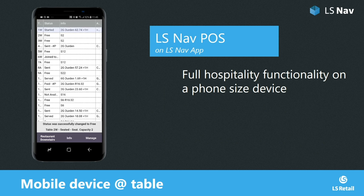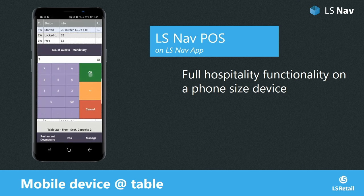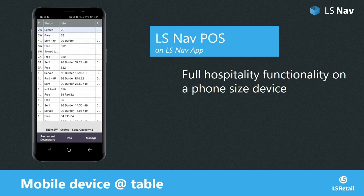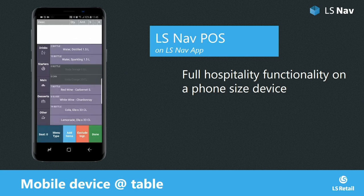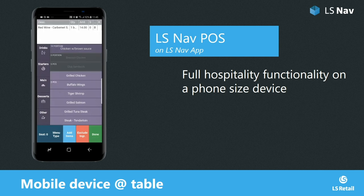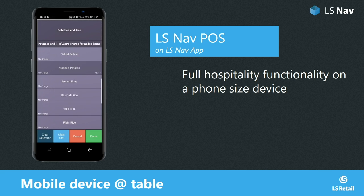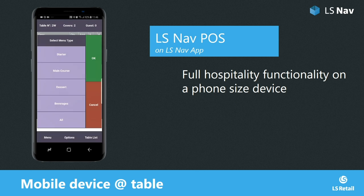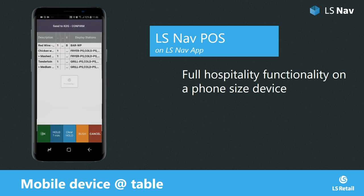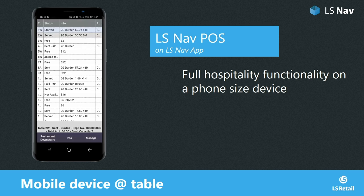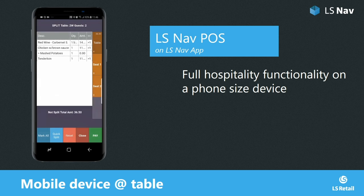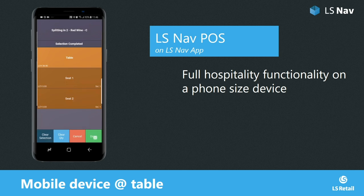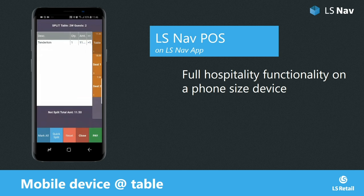We have full hospitality functionality on a phone-size device. Let's look at how you split a bill. Open a table for two, enter the order with modifiers and deals, and send the order to the kitchen. When they want to pay and want a separate check, you can split the check at the table and get payment.